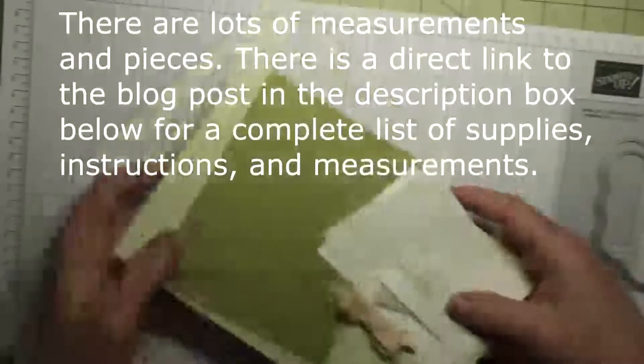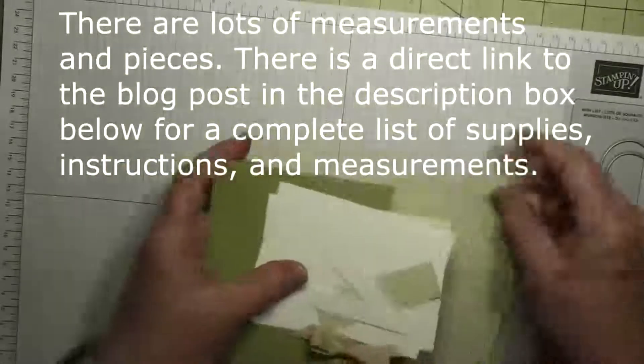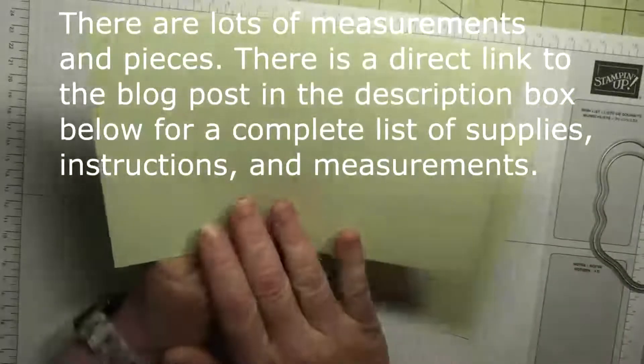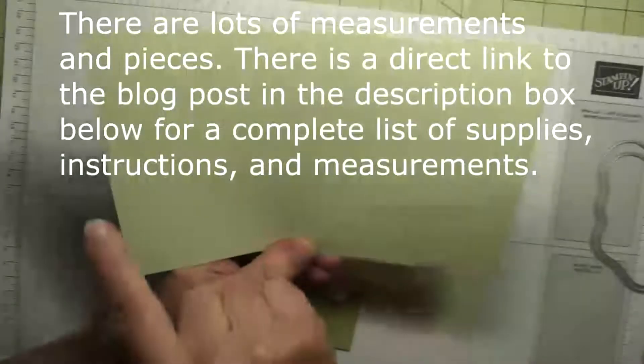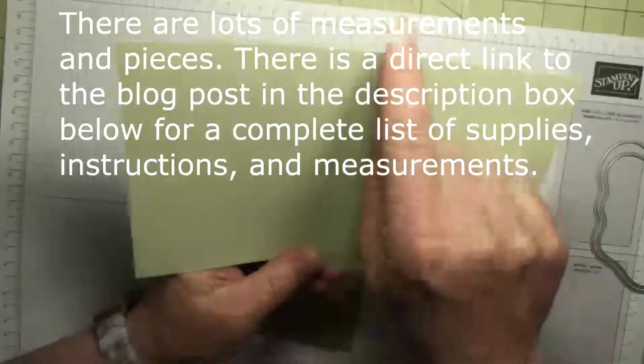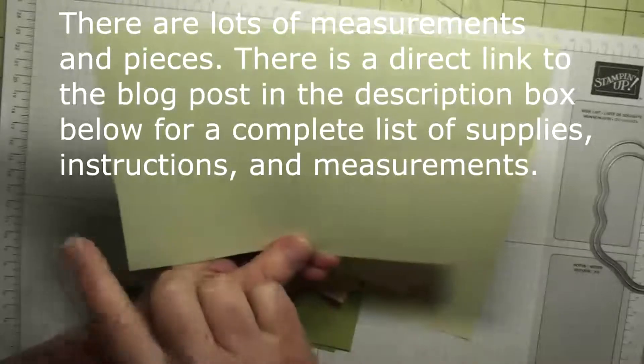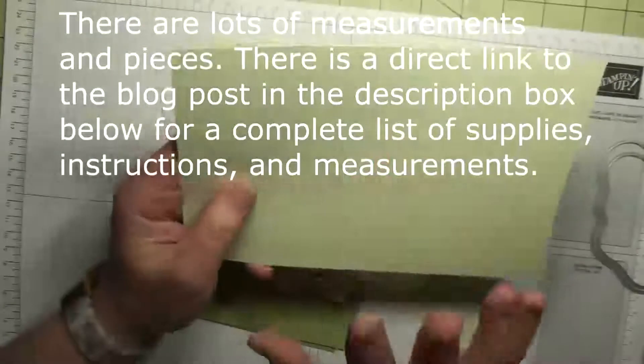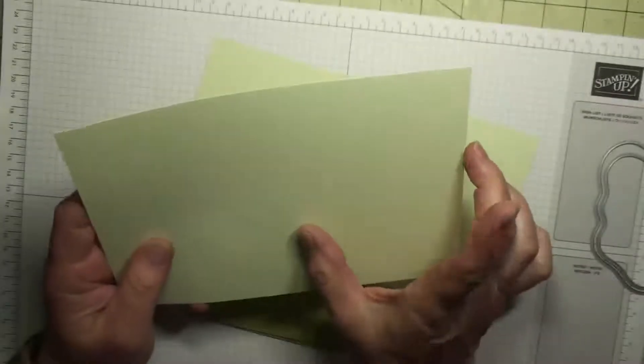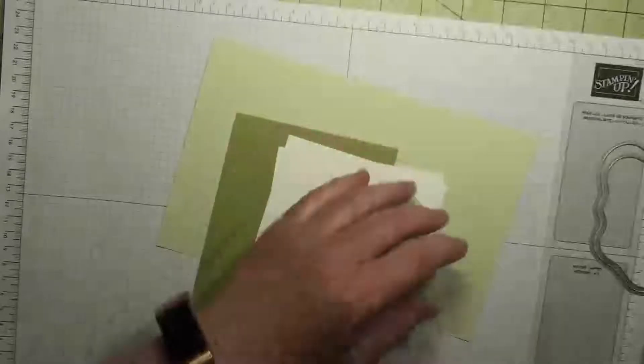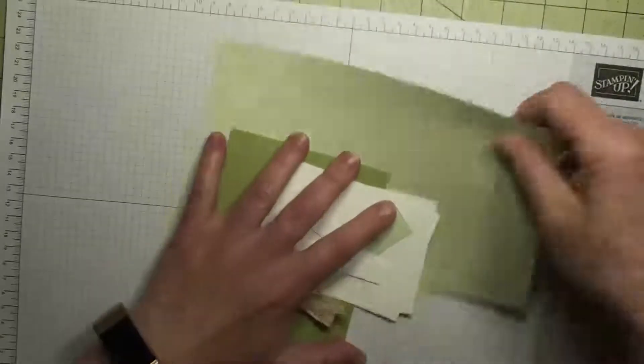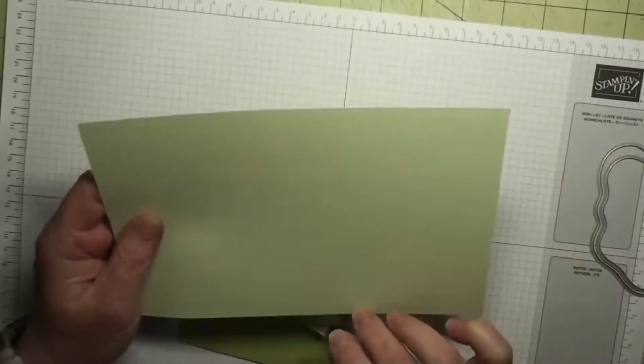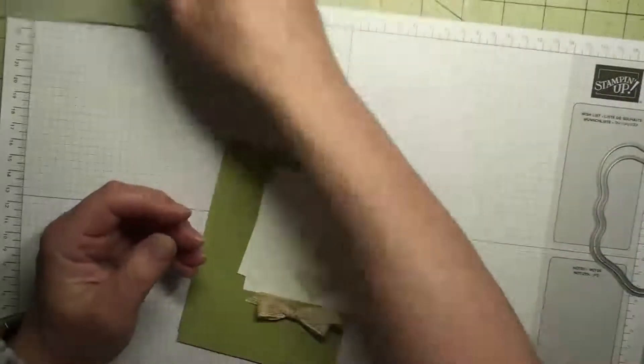First thing we need our supply list. So our card base is not your typical card base. It is eight inches by five and a half, so we cut a half an inch off of one side and then it's scored at four and a quarter, so it's almost a normal card base. It's just one side is shorter than the other. Then we need another piece of card stock that is eight and a half by five and a half, and we'll score that in a minute.